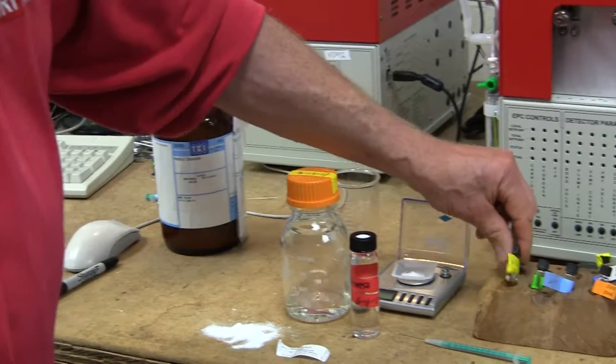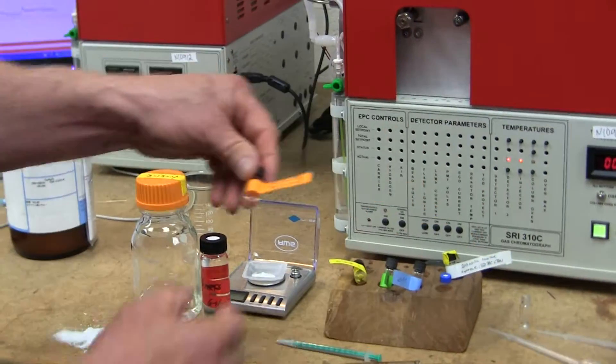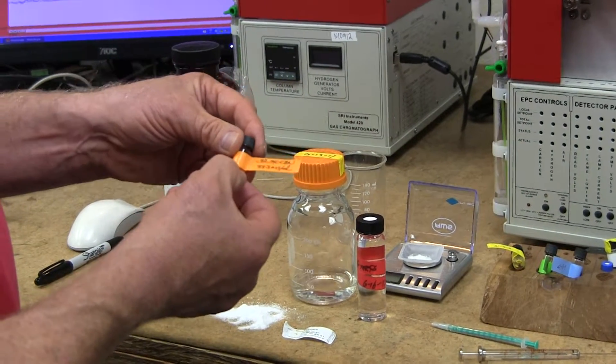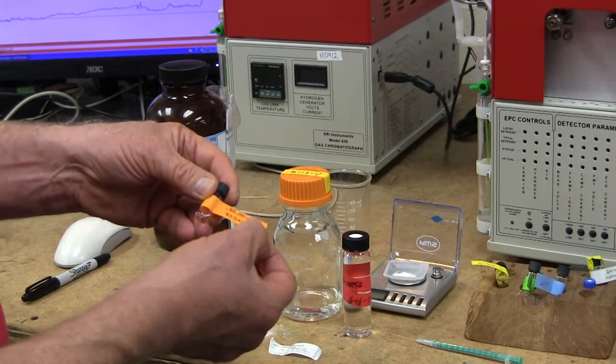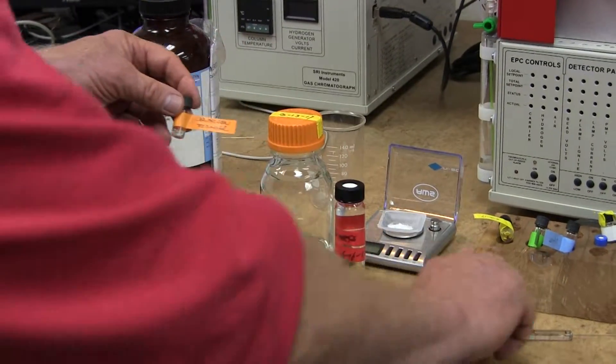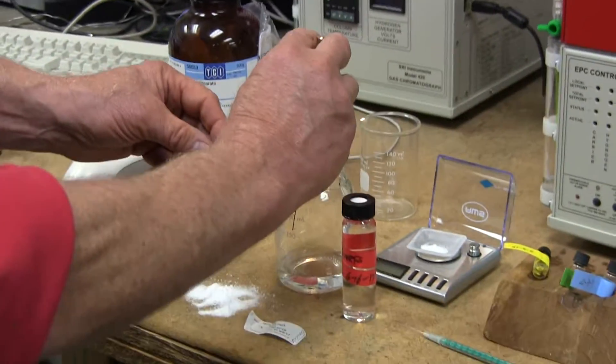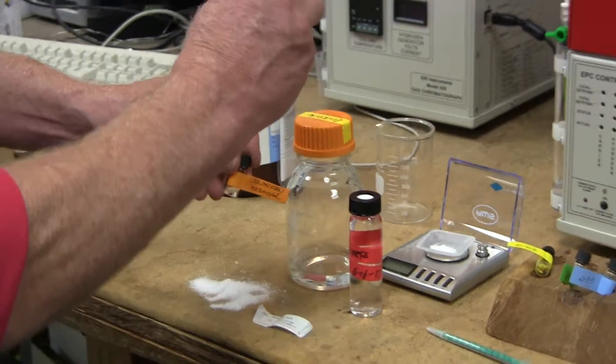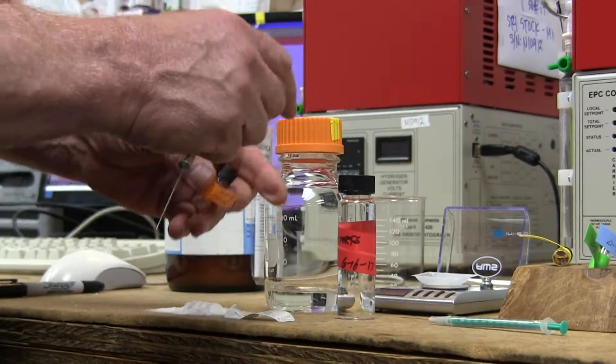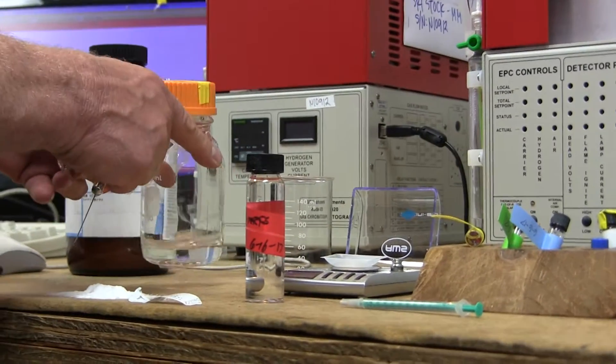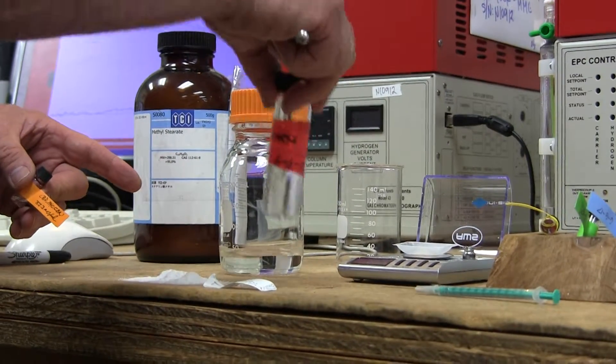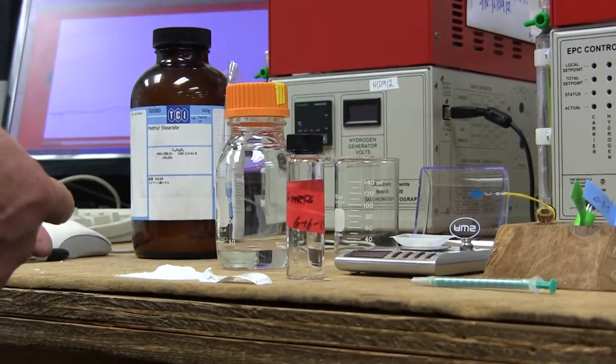Just a couple minutes ago, we were talking about how to make the external standard calibration into an internal standard calibration. The way we do that is by taking an equal amount of liquid out of the internal standard solution jar and putting it into the external standard. But instead of just using the plain internal standard solution, we're going to use the internal standard solution that we've added the terpenes to.